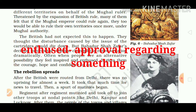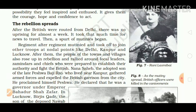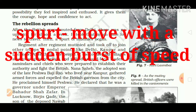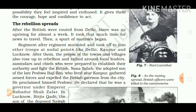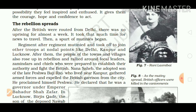After the British were routed from Delhi, there was no further uprising for almost a week — it took that much time for news to travel. Then a spate of mutinies began. Regiment after regiment mutinied and took off to join other troops at nodal points like Delhi, Kanpur, and Lucknow. After them, the people of the towns and villages also rose up in rebellion and rallied around local leaders, zamindars, and chiefs who were prepared to establish their authority and fight the British.